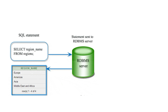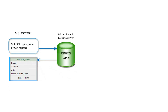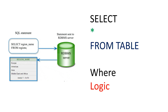Whenever we trigger any SQL statement, it hits our RDBMS. If you haven't watched my DBMS tutorial series, please go ahead and watch that — you'll learn what RDBMS is. The SQL statement hits the RDBMS and we get the result. For example: SELECT region_name FROM region — here 'region' is some table, and it returns only the region names like Europe, America, Asia.